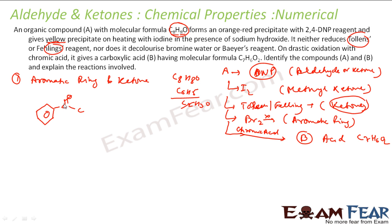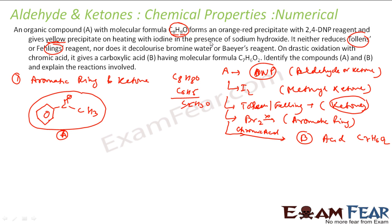Oxygen is accounted for and three hydrogens are placed here. This is compound A — it is aromatic, it is a ketone, and it has the molecular formula C8H8O. With these three pieces of information we can draw the structure. So compound A is acetophenone.